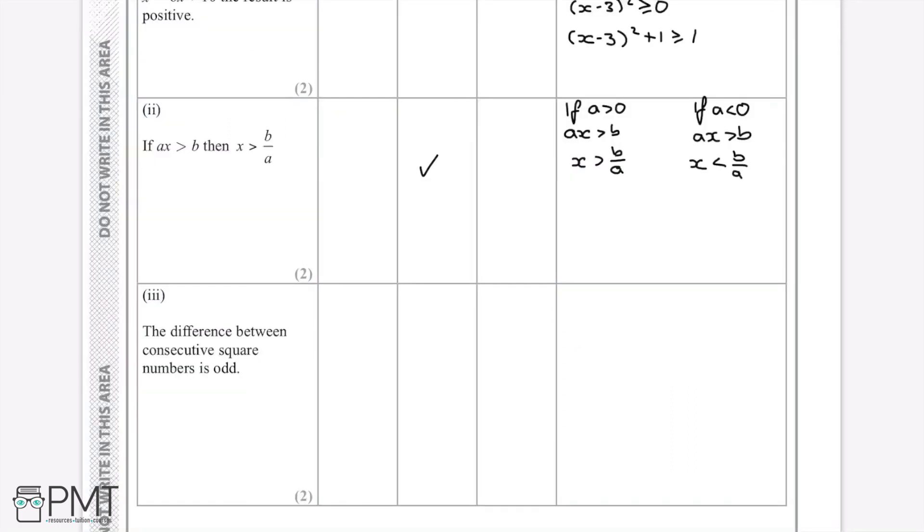The difference between consecutive square numbers is odd. So first of all, as a general formula, if you like, for a square number, if we use n, then the square number would be n squared. And then the consecutive square number to this must just be n plus 1 squared.